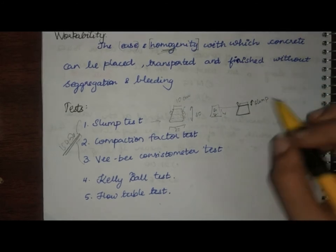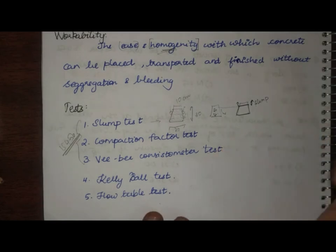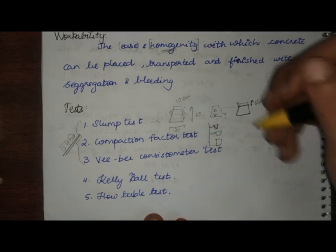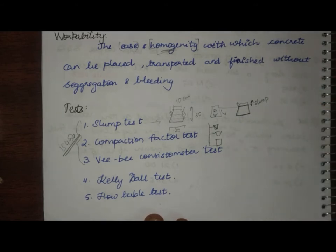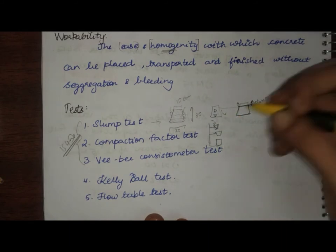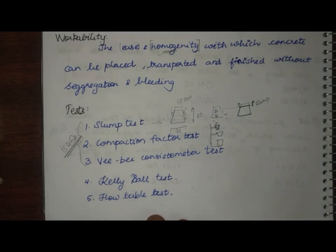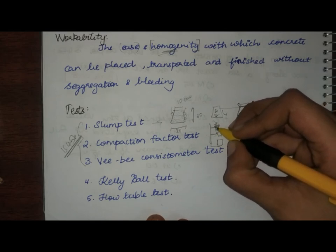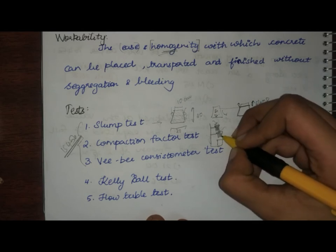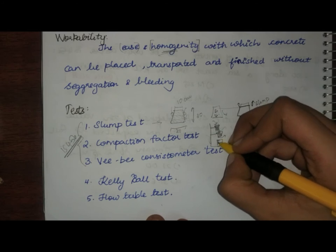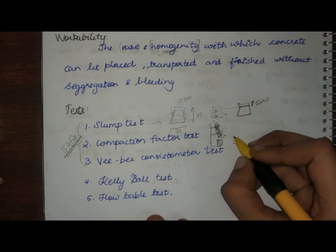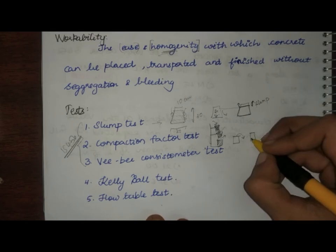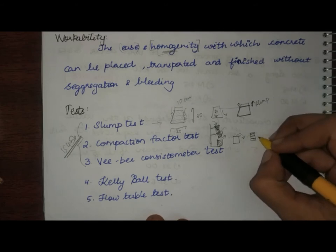Next is the compaction factor test. Here we have two hoppers and one cylinder. First, we pour concrete into the top hopper — no tamping or compaction, just free-falling. We open the trap door so the concrete travels to the second hopper, then open that trap door so the concrete falls into the cylinder. The top is leveled and the cylinder is weighed.